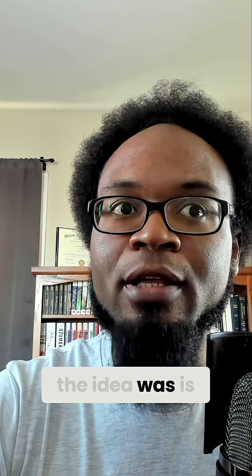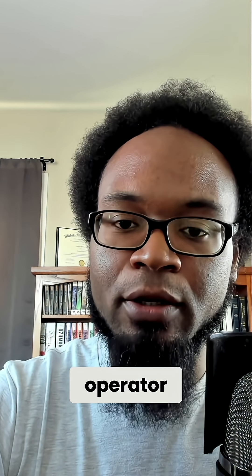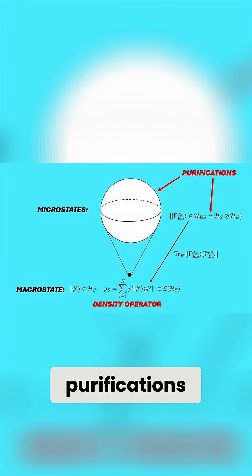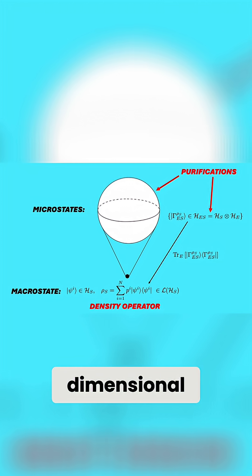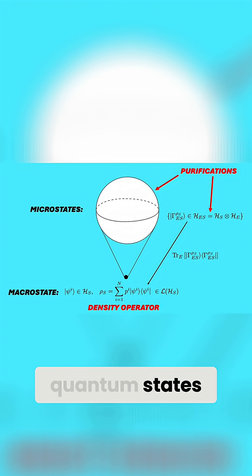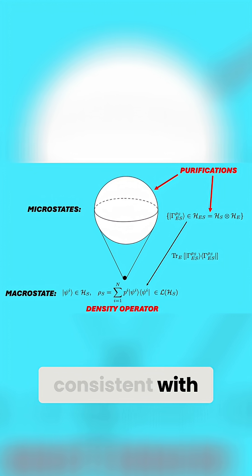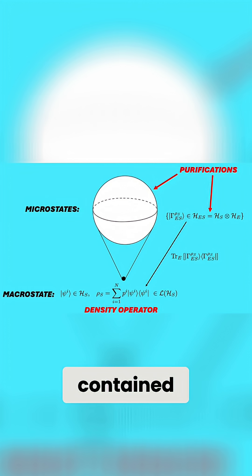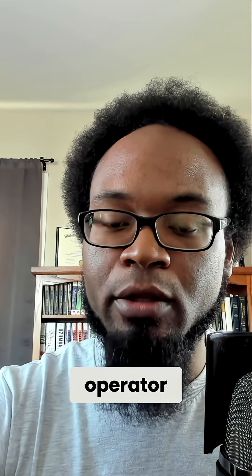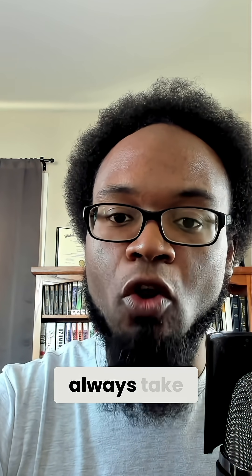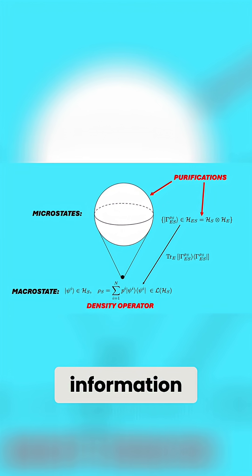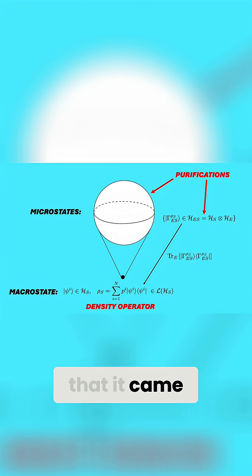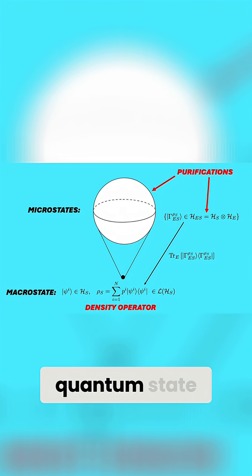So the idea was that for each density operator, there exist these things called purifications. And purifications are precisely higher dimensional, higher resolution quantum states that are consistent with the macro information contained within a density operator. So in quantum mechanics, you can always take a density operator that's not pure, meaning that it has some missing information, and you can assume that it came from some higher dimensional quantum state.